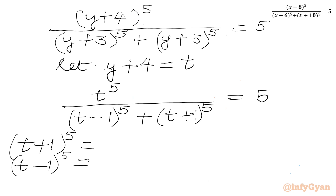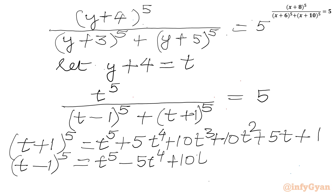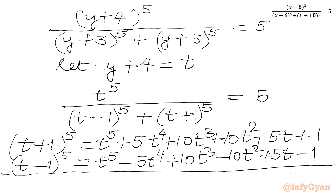So let me write (t+1)^5 as t^5 plus 5t^4 plus 10t^3 plus 10t^2 plus 5t plus 1. Now we write (t-1)^5 as t^5 minus 5t^4 plus 10t^3 minus 10t^2 plus 5t minus 1. Now we have to add both expansions.